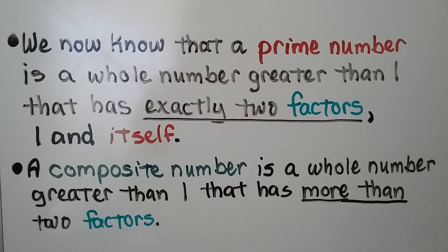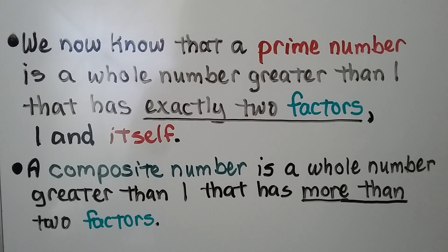We now know that a prime number is a whole number greater than 1 that has exactly two factors, one and itself. A composite number is a whole number greater than 1 that has more than two factors.